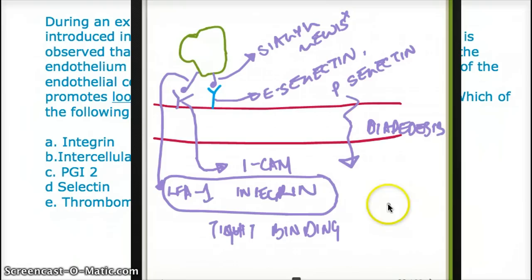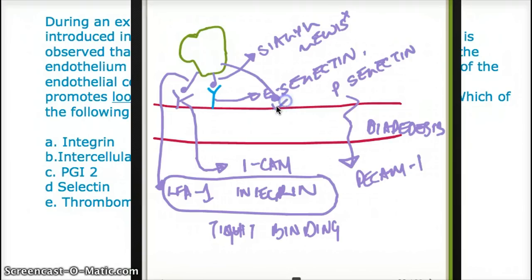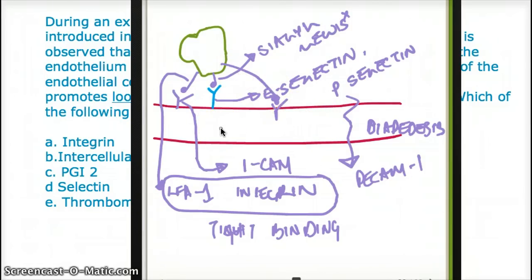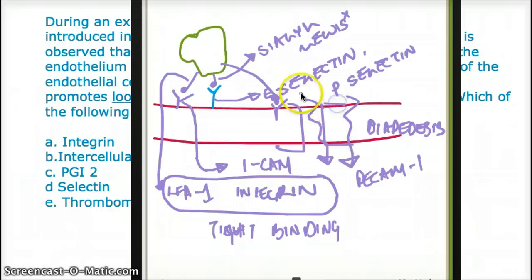Diapedesis is achieved by PCAM-1. PCAM-1 is present on both the white blood cell and the vascular endothelium. So both the receptor and the ligand are called PCAM-1 — that is for diapedesis, or moving through and between the vascular endothelial cells.